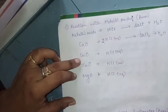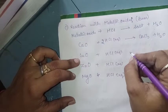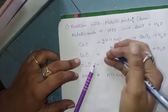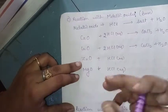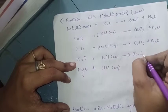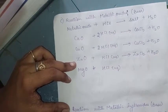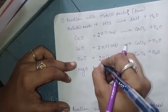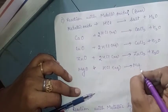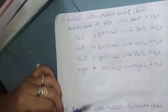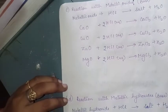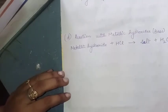CaO + 2HCl → CaCl₂ + H₂O. CuO + 2HCl → CuCl₂ + H₂O. ZnO + 2HCl → ZnCl₂ + H₂O. MgO + 2HCl → MgCl₂ + H₂O. To balance each equation, we substitute 2 in front of HCl. All metallic oxide reactions with HCl give salt and water as products.